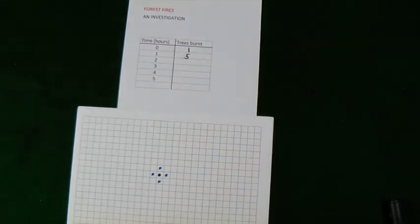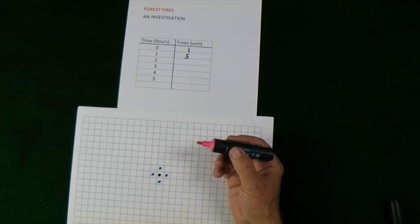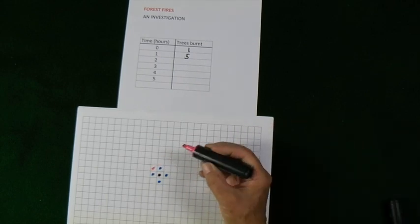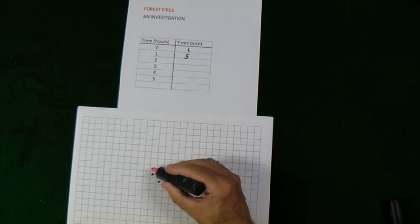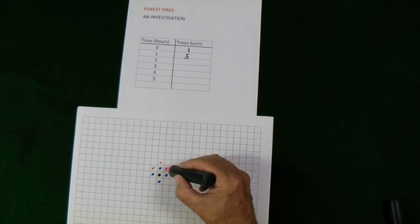Make a note. Let's see what happens over the next hour. Each of those blue trees will set off another tree. I'm drawing them in pink so you can see. So that would be set off by both trees, won't it? That one. Not that one. This one.